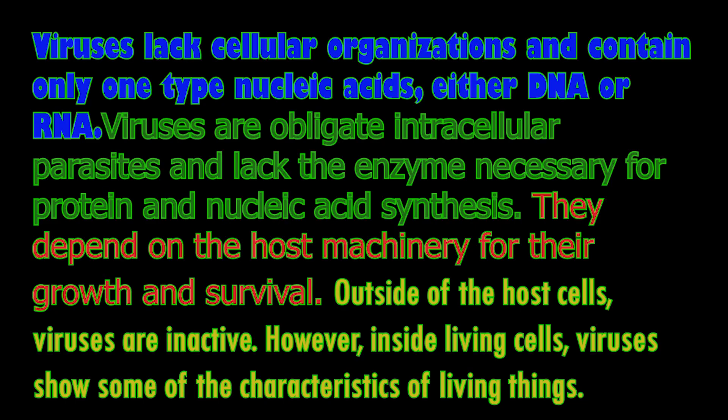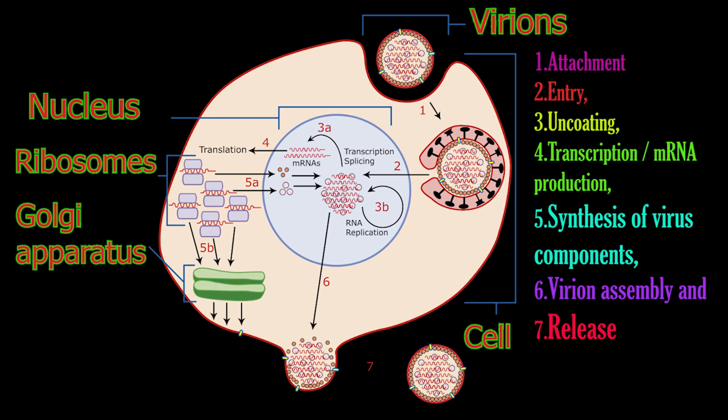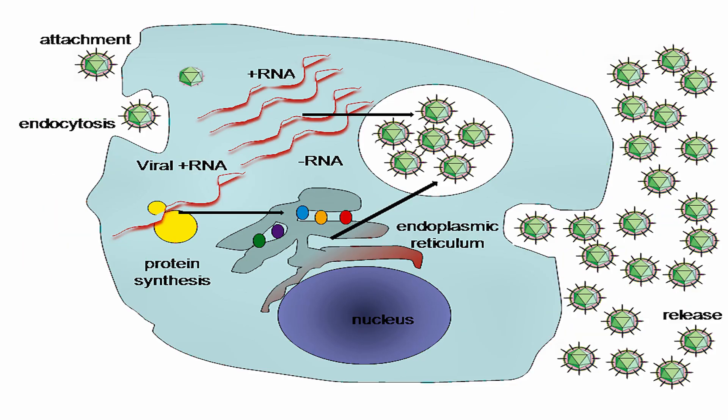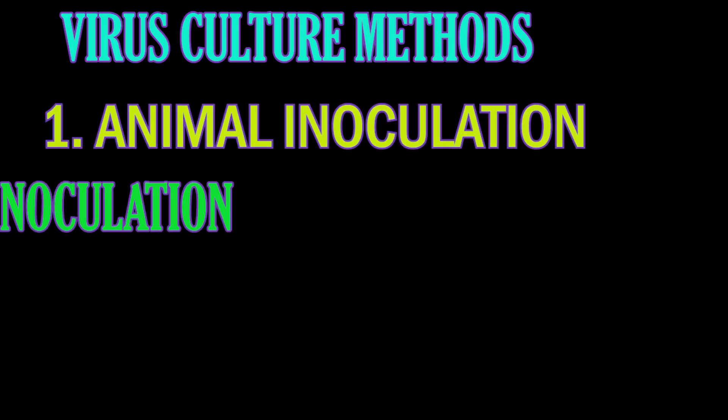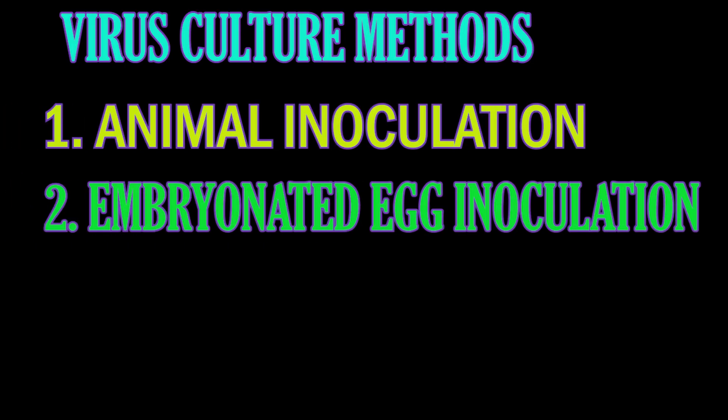Viral culture methods. Viruses do not have enzymes for their survival and replication. They need host cells for their survival and replication, so they cannot grow in artificial media like bacteria. They need living cells for their growth. There are three methods for viral cultures.